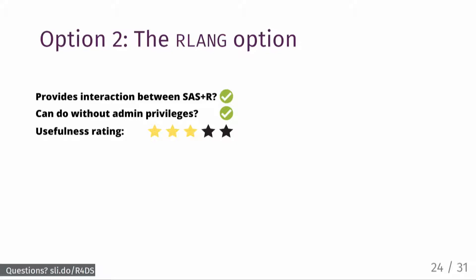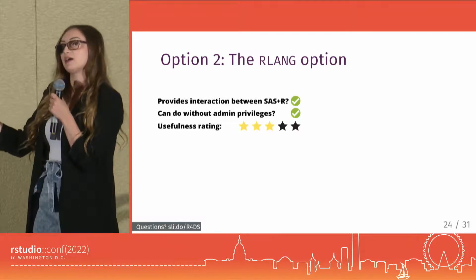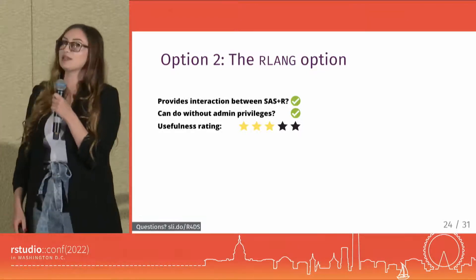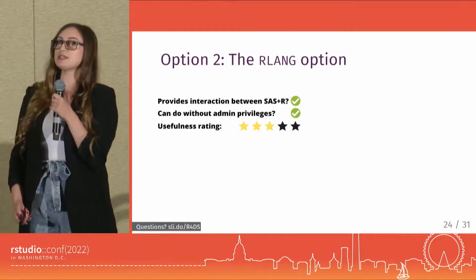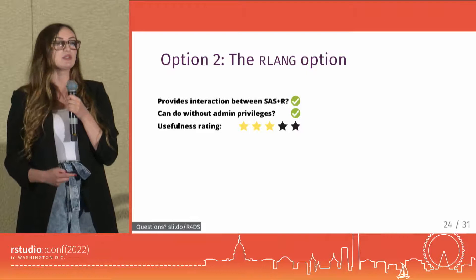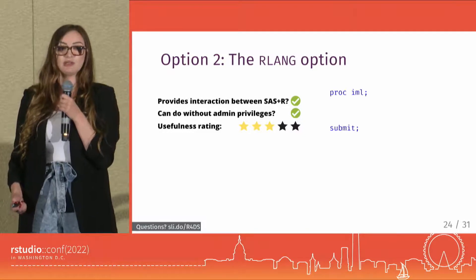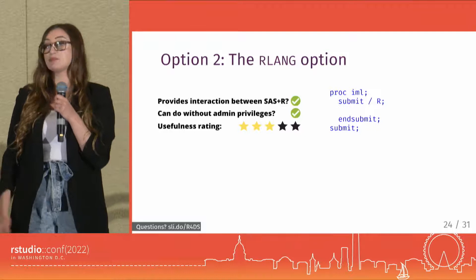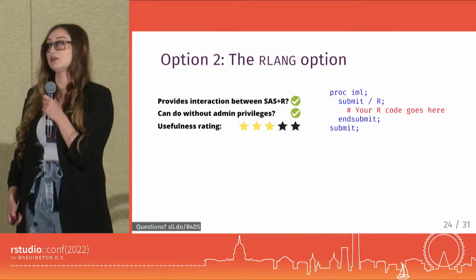The second approach is a SAS-first approach rather than an R-first approach. When SAS is launched, there's an option you can enable called RLANG — and the RLANG in all caps has absolutely no relationship to the rlang package in R; it's a SAS concept, not an R concept. The RLANG option can be enabled without admin privileges, and it's pretty easy to move data back and forth between SAS and R using this method, which makes it quite a bit more useful than the SAS Markdown package. Once the RLANG option is enabled, you can use proc-iml in SAS to execute R code. Just use a submit statement with the R option enabled, and anything between the submit and end-submit lines will be executed as R code rather than SAS code.